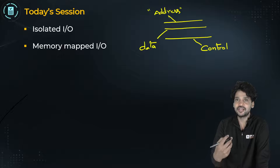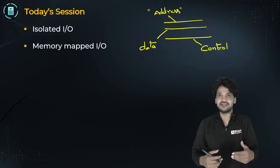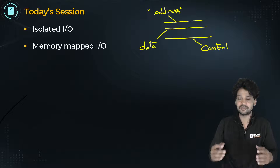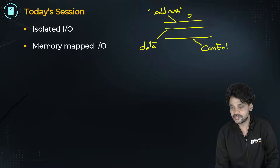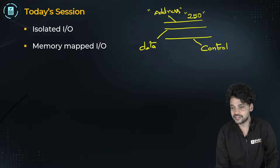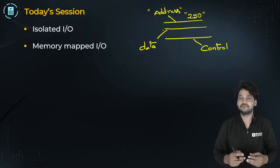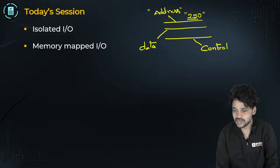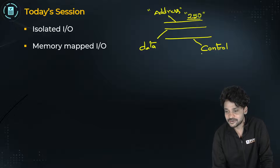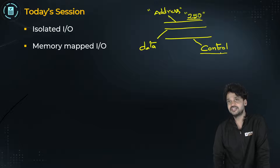The address bus is filled up with the address of the location from which, or to which, either reading or writing is to happen. For instance, the CPU wants to make a transfer to the main memory, for which the address bus should be filled up with the address — let us say 250. The data bus contains the actual data byte that is to be written at that specific address.